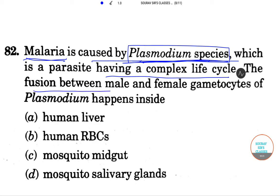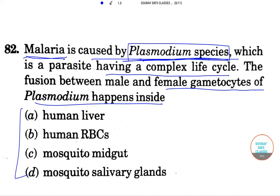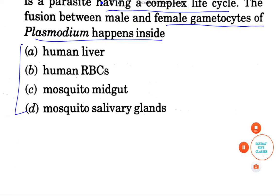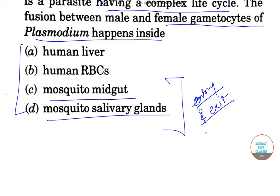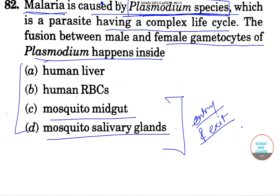The question asks: the fusion between male and female gametocytes of Plasmodium happens inside which of the following? Now, the mosquito midgut and mosquito salivary glands are the two main key entry and exit points for pathogens like Plasmodium.